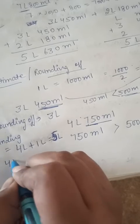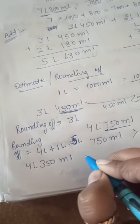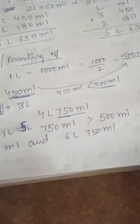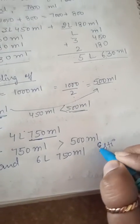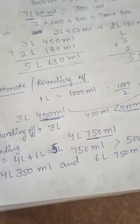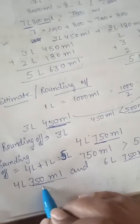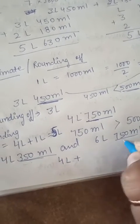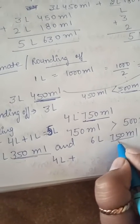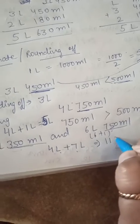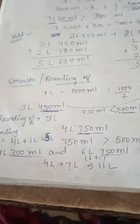If you have to estimate the sum of four liters three fifty milliliters and six liters seven fifty milliliters: three fifty is less than five hundred, so that rounds to four liters. Seven fifty is more than five hundred, so six plus one equals seven liters. Then four plus seven equals eleven liters as the estimated sum.